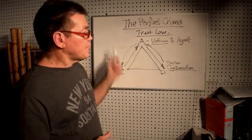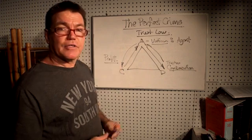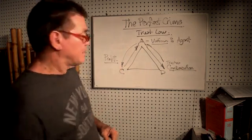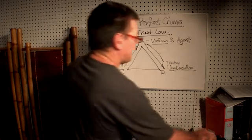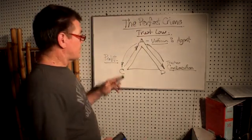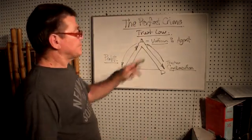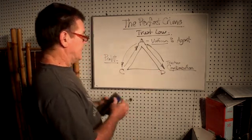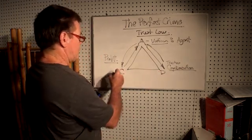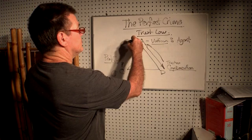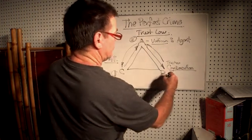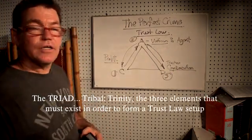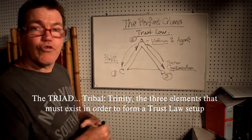Now that you know the truth about the trust, you should be able to detect the lie. There's a creditor, there's an administrator, there's a debtor — one, two, three parties. That makes up the trinity of the trust.